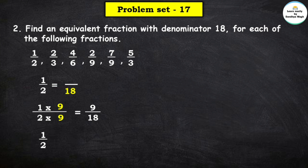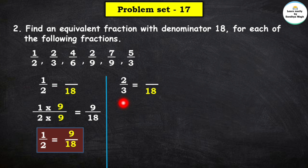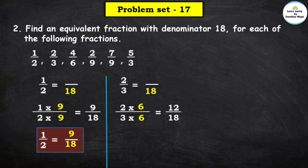Next fraction given is 2 upon 3. We have to find its equivalent fraction with denominator 18. In the 3 times table, 3 × 6 = 18. So we multiply both numerator and denominator by 6: 2 × 6 = 12 and 3 × 6 = 18. So the equivalent fraction of 2 upon 3 is 12 upon 18.